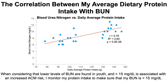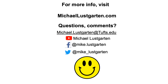Considering that lower levels of BUN are found in youth and that greater than 15 is associated with increased all-cause mortality risk, I monitor my protein intake to make sure that my BUN stays less than 15 mg per deciliter. For more, you can find me online. Have a great day.